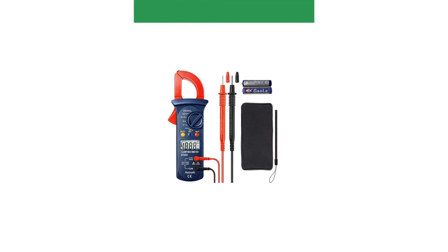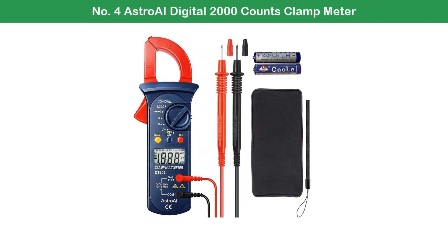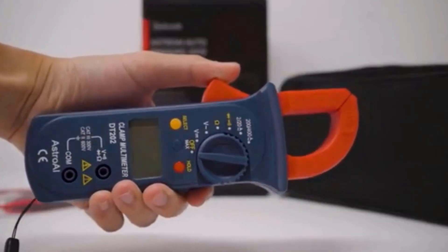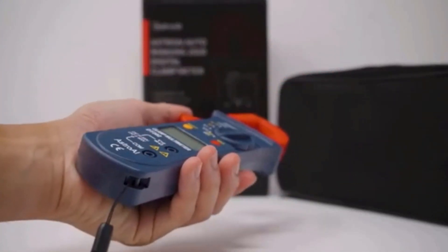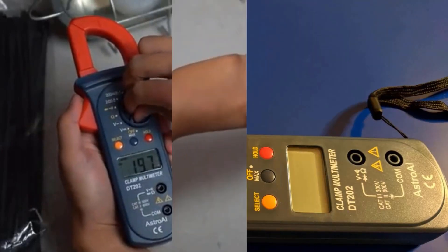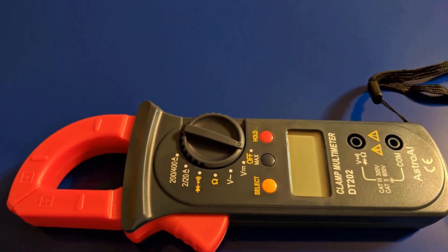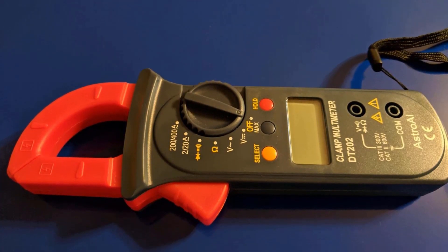Number 4: Astro AI Digital 2000 Counts Clamp Meter. The Astro AI Digital 2000 Counts Clamp Meter is a top choice for those seeking affordability without compromising on functionality, earning its spot among the best clamp meters. This device is designed for precision and convenience, making it ideal for both professionals and hobbyists.